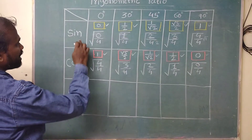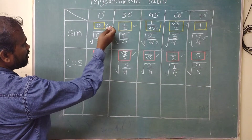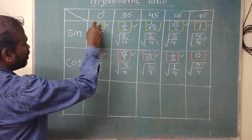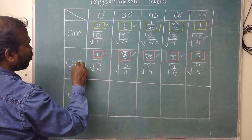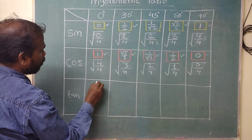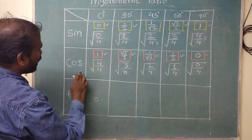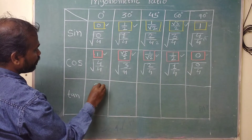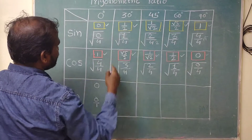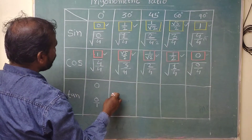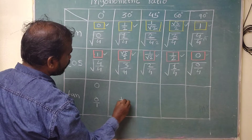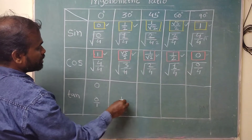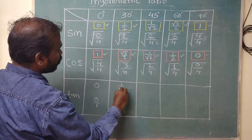Now, how to calculate tan theta. Tan theta is simply sin theta divided by cos theta — just take the value of sin theta upon cos theta. For tan 0°: sin 0° is 0 and cos 0° is 1, so 0/1 = 0. For tan 30°: sin 30° / cos 30° = (1/2) / (√3/2). The 2s cancel, giving 1/√3.